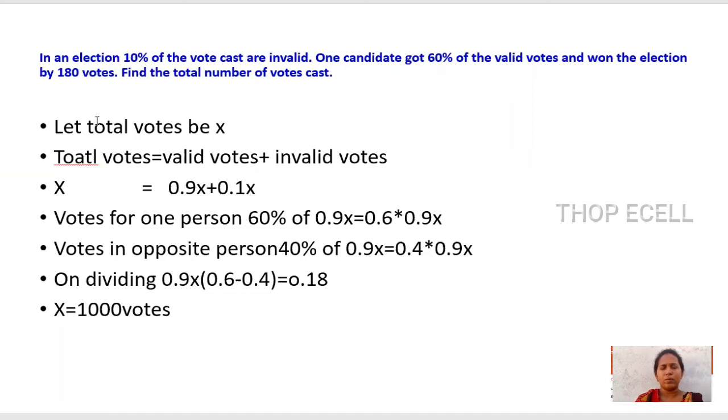Let total votes be X. Total votes equal valid votes plus invalid votes. We take 10% votes cast as invalid, and remaining 90% votes are valid. Total votes X equals 0.9X plus 0.1X. One candidate has 60% and the other has 40%. Votes for one person: 60% of 0.9X equals 0.6*0.9X. Votes for the other person: 40% of 0.9X equals 0.4*0.9X. On dividing 0.9X(0.6-0.4)=0.18, we get X=1000 votes.